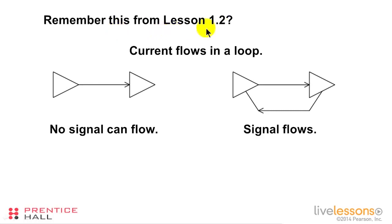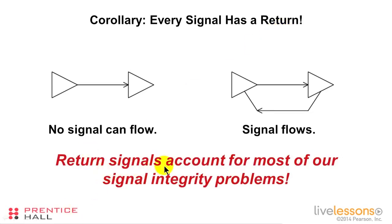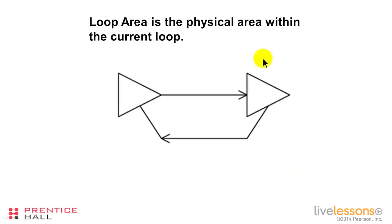We also said in lesson 2 that current flows in a loop. If we simply have a driver and a receiver and a trace connecting them, current can't flow and a signal can't flow. But if we have a return path for the current, then signals can flow. The corollary to that rule is that every signal has a return, and you need to know where that is because it's the return signals that account for most of our signal integrity problems. We also defined the concept of a loop area — the physical area within the current loop.